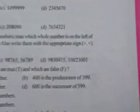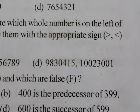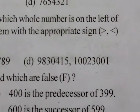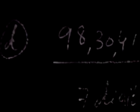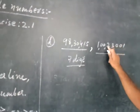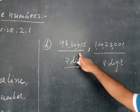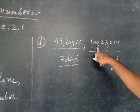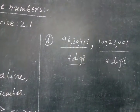Now the last one. See the numbers — counting the digits: one number has 7 digits and the next one has 8 digits. By this we can justify: the number having more digits is definitely bigger than the number having fewer digits. So we can say 1,23,001 is bigger than 98,30,450.